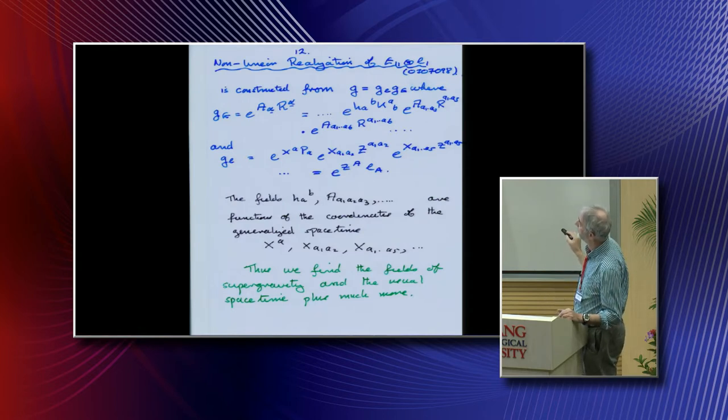This may appear complicated, but it's not really. I'm going to do exactly what I did in 2003 for the non-linear realization of G, which is E11, semi-direct product L1. The group element has a bit in the L and a bit in the E. The bit in the L, we found what they were. We have X^A P_A, and here we have X^{A1,A2} Z_{A1,A2}, and similarly here, and on it goes.